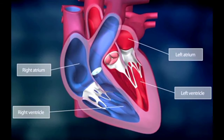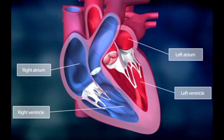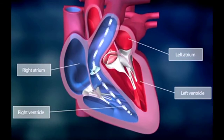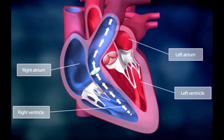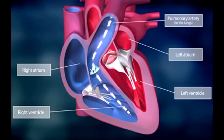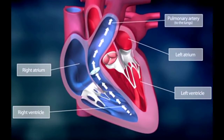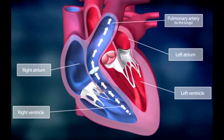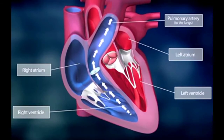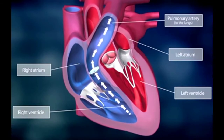The right and the left side of the heart work hand in hand. The right side of the heart pumps blood through the pulmonary artery into the lungs, where it is enriched in oxygen.